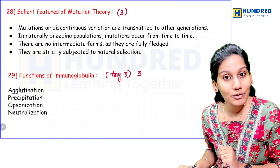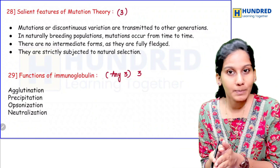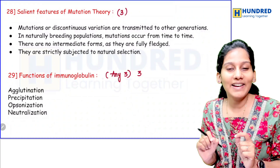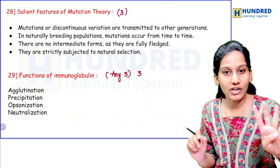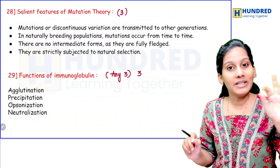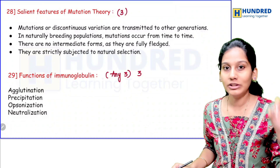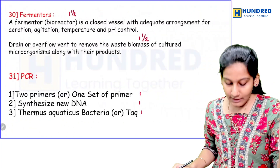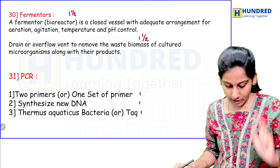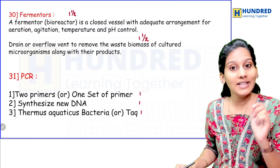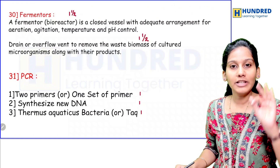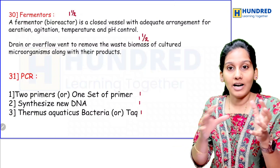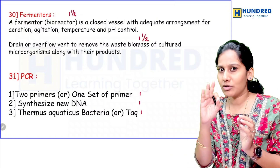Functions of immunoglobulin — if you have the structure of immunoglobulin, you will have a diagram. But for functions, there are four functions and you will have three marks. For the first line, one and a half marks; second line, one and a half marks. For PCR, very importantly, there are three words — usually three words but three points, so three marks.